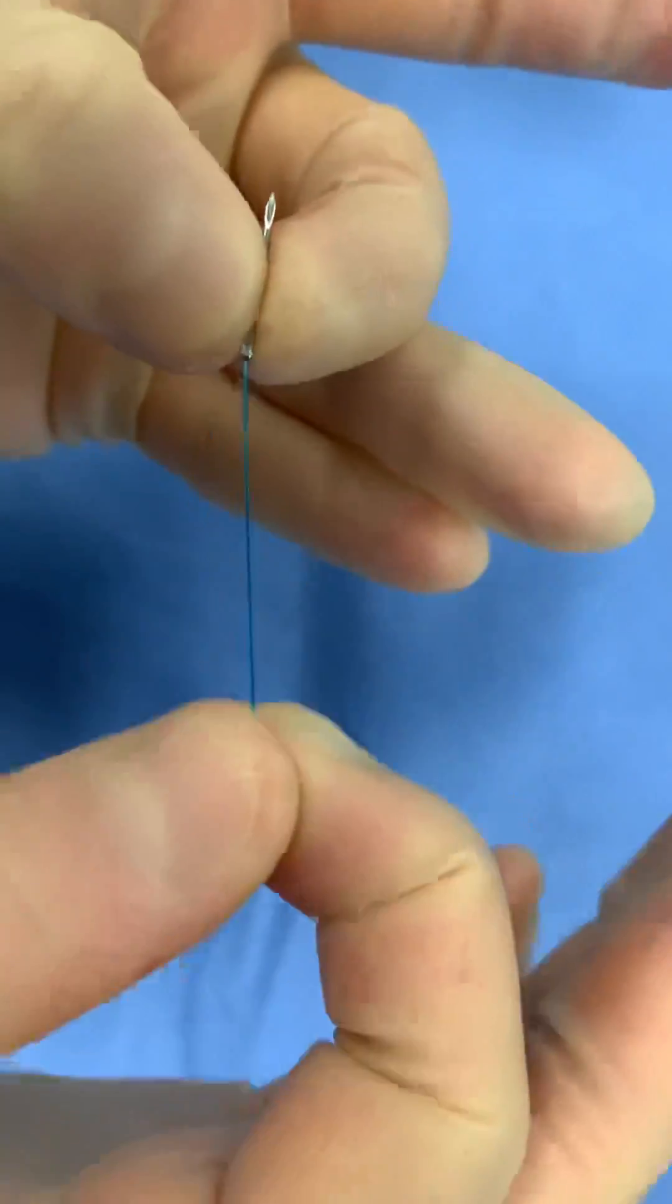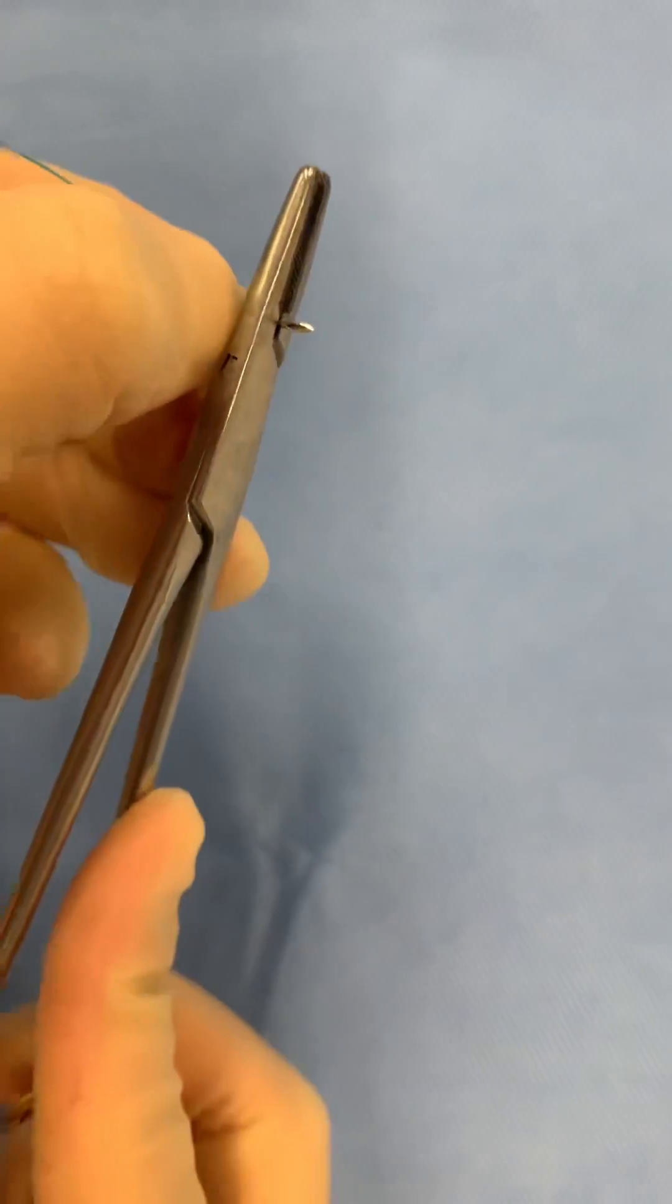Perform a tug test to ensure the thread cannot be pulled out. Then very carefully, bend the needle into a half circle.